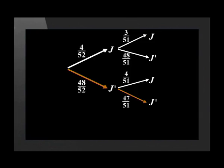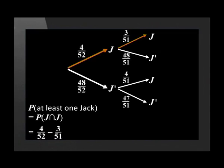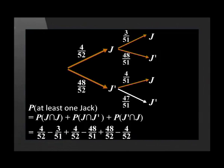The second question asks us to find the probability of drawing no jacks. This will happen when no jack is drawn on the first or second draw: 48 over 52 times 47 over 51, which as a decimal is approximately 0.85. The last question asks us to find the probability of drawing at least one jack. That equals the probability of a jack on the first draw and a jack on the second, plus the probability of a jack on the first draw and no jack on the second, plus the probability of no jack on the first draw and a jack on the second. This gives us approximately 0.149.